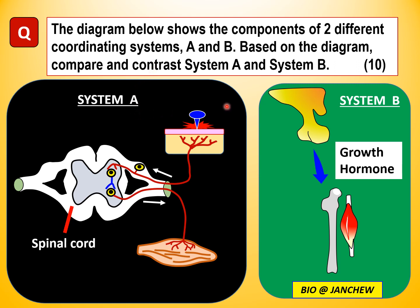In system B, we see a structure secreting growth hormone that acts on target tissues like bones and muscles — this structure is the pituitary gland. So system B is the endocrine system. Based on the diagram, we compare and contrast the nervous system (A) and the endocrine system (B). After identifying the systems, you should discuss both similarities and differences, and you must include both.